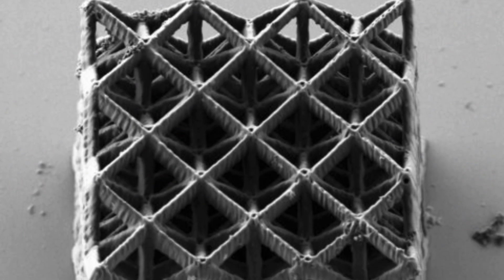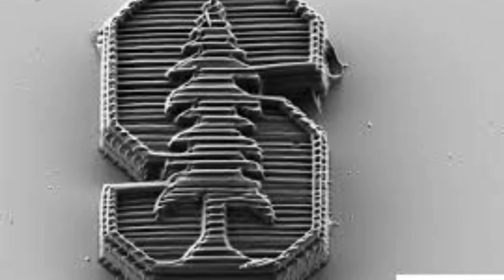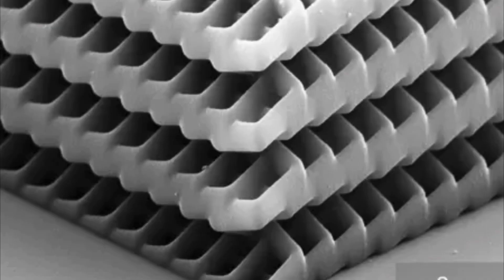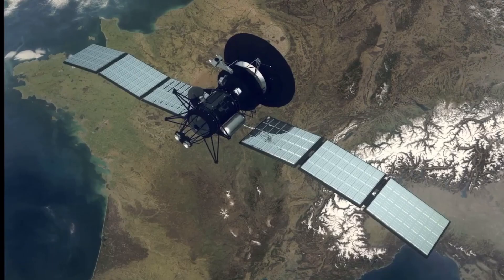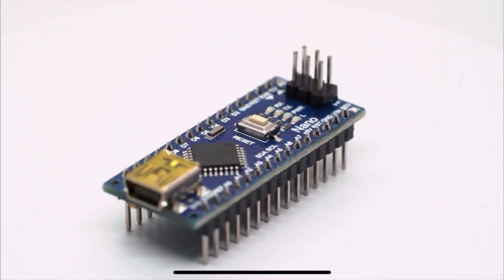The increased speed also allows them to print the material in a protective lattice that can absorb twice as much energy as previous materials. Currently, the new lightweight material is being tested to provide structural protection for satellites, drones, and microelectronics.